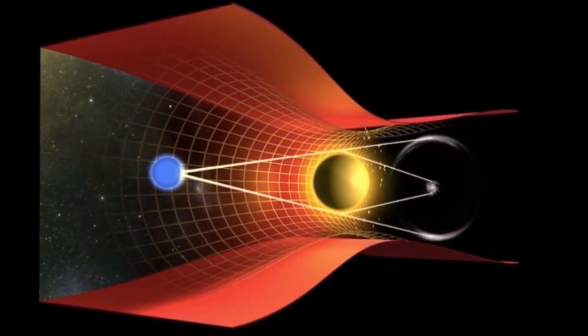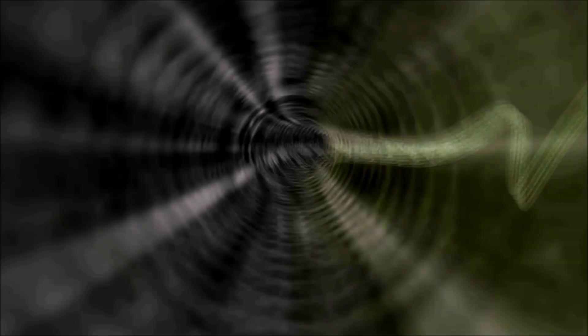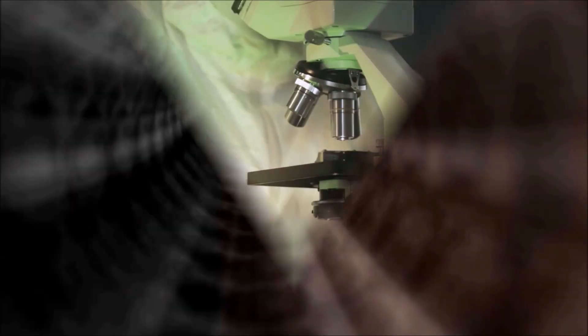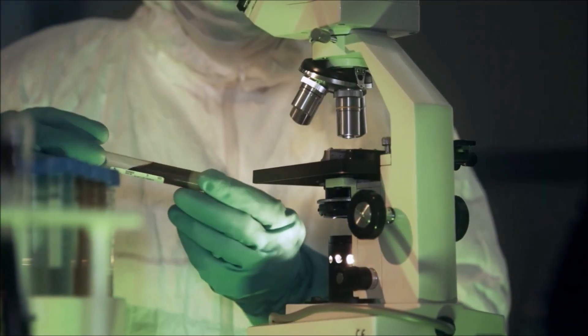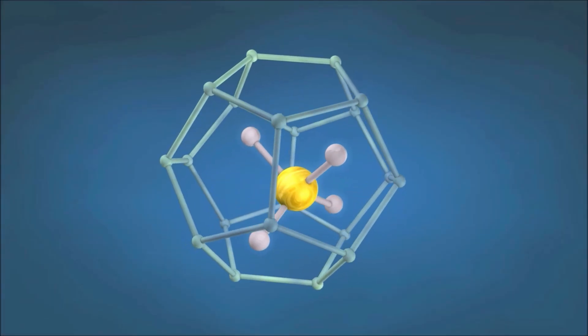So if there are all these extra dimensions, how come we don't experience them? In two-time theory, they're so unimaginably small that we can't see them. We basically move through these tiny, balled-up dimensions all the time, but we never notice them.